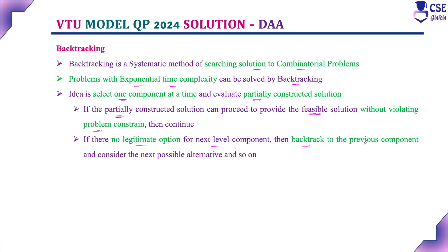Every step, you are selecting only one component. If it is not possible to derive the feasible solution, backtrack to the previous step by leaving the next level component. Backtrack to the previous step and check for other possibilities. If those alternatives proceed to provide a feasible solution, continue. This procedure continues until you solve the complete problem.